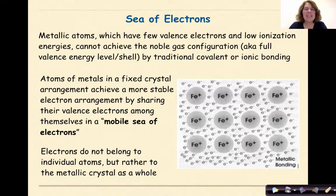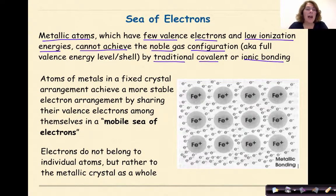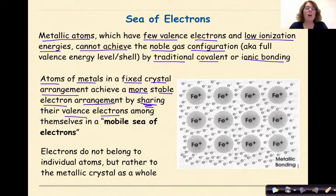Let's talk about the term sea of electrons. Metallic atoms, which have a few valence electrons — not a ton, but a few valence electrons — and low ionization energies cannot achieve the noble gas configuration by traditional covalent or ionic bonding. Instead, atoms of metals in a fixed crystal arrangement achieve a more stable electron arrangement by sharing their valence electrons among themselves in a mobile sea of electrons.